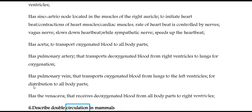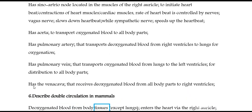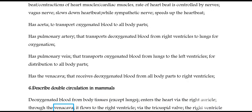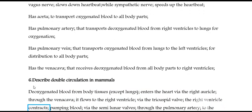Describe double circulation in mammals. Deoxygenated blood from body tissues, except the lungs, enters the heart via the right auricle through the vena cava. It flows to the right ventricle via the tricuspid valve, and the right ventricle contracts, pumping blood via the pulmonary artery.